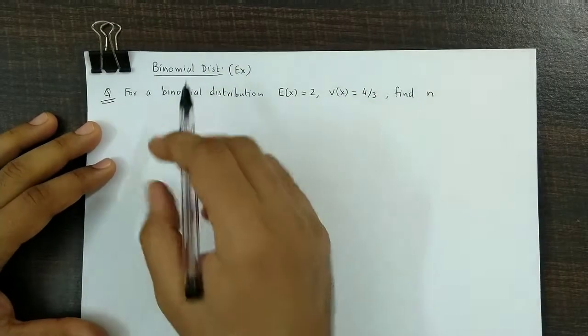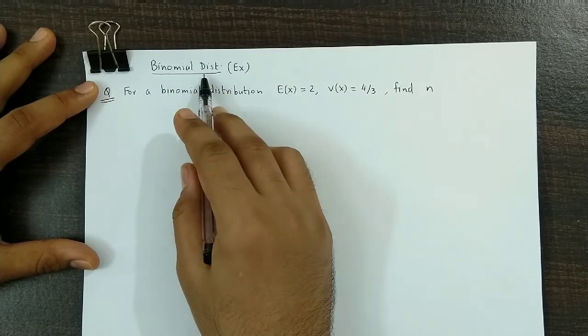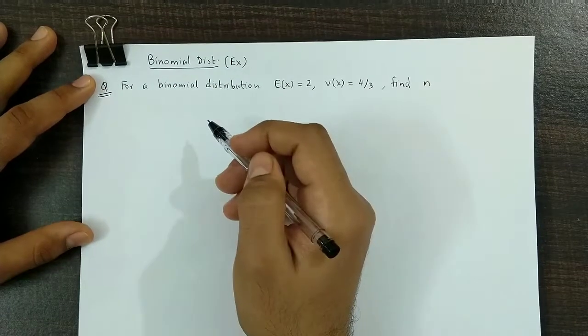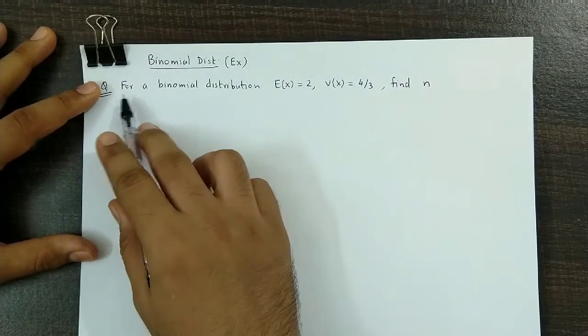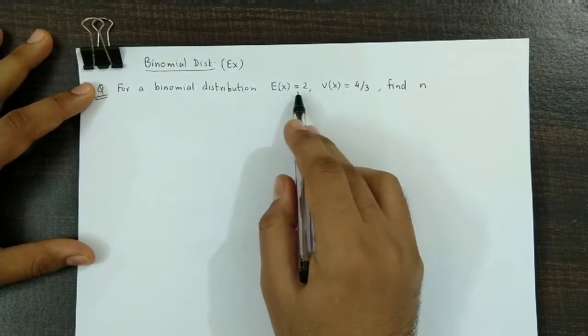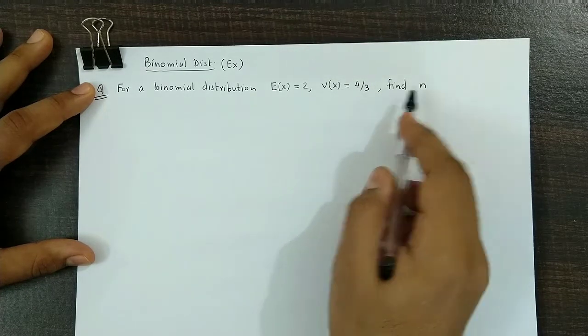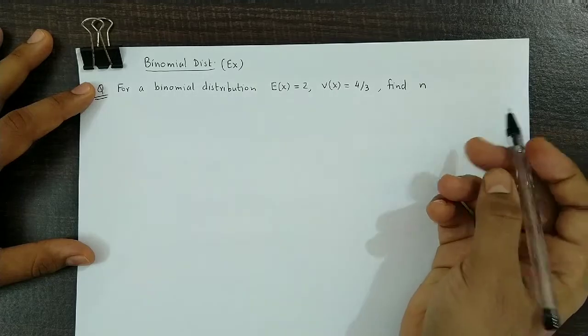Hello and welcome back. In this video we are going to discuss an example based on binomial distribution. The question is for a binomial distribution E(X) = 2, that is the mean value is 2. Variance V(X) = 4/3. Find N, that is the number of trials.